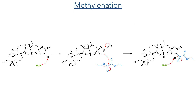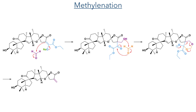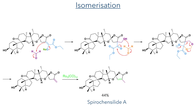With this lactone now complete, the authors needed to install a methyl group at the alpha position. To do this, it was first deprotonated with sodium hydride and the resulting enolate then added to diethyl oxalate, eliminating one equivalent of ethoxide. An enolate is once again formed at the alpha position by deprotonation with sodium hydride and this then adds to formaldehyde, producing an alcohol upon protonation. This alcohol then adds to another equivalent of formaldehyde, generating an alkoxide that attacks the ketone, forming a tetrahedral intermediate that can then fragment, forming an exomethylene group. This methylene group was isomerised using trirhenium dodecacarbonyl to produce spirochinenside A in a 44% yield.